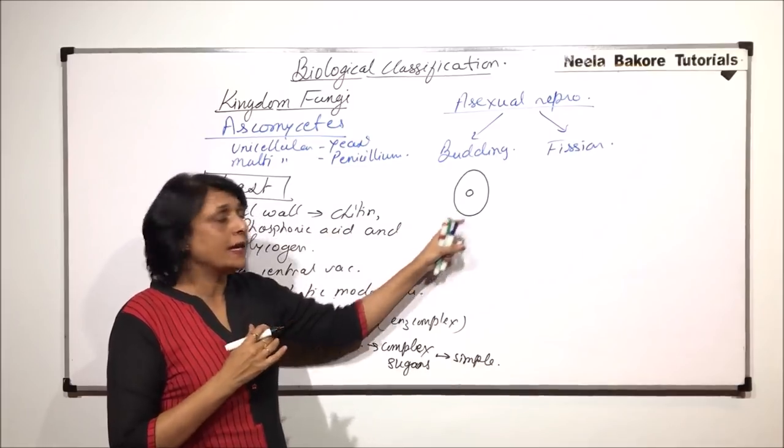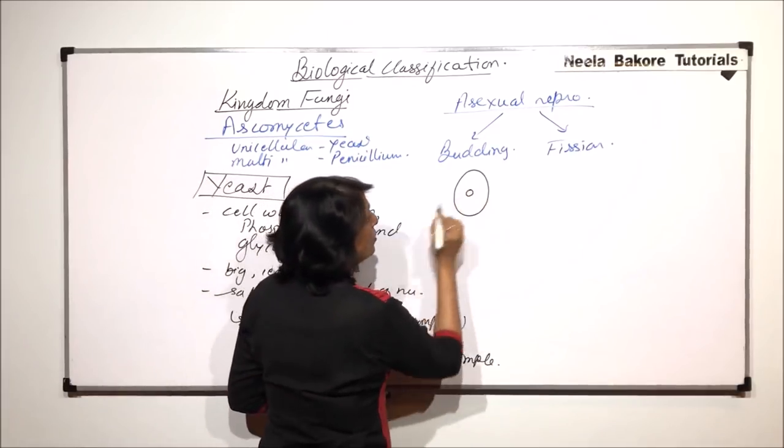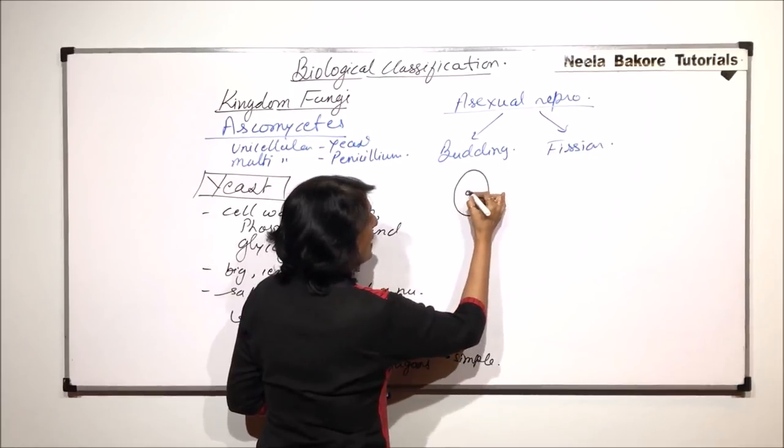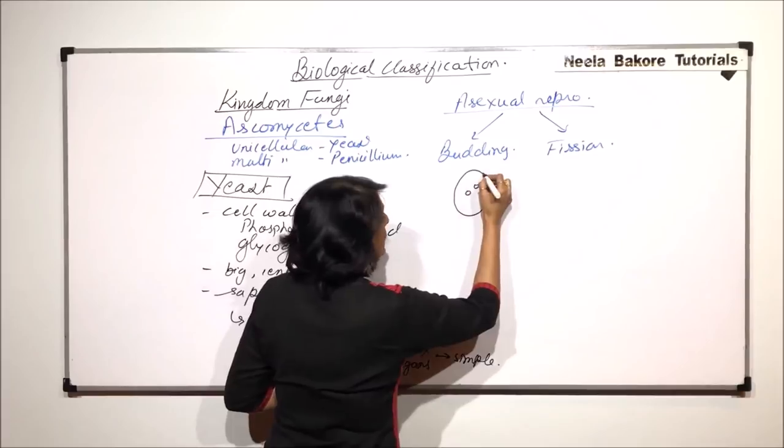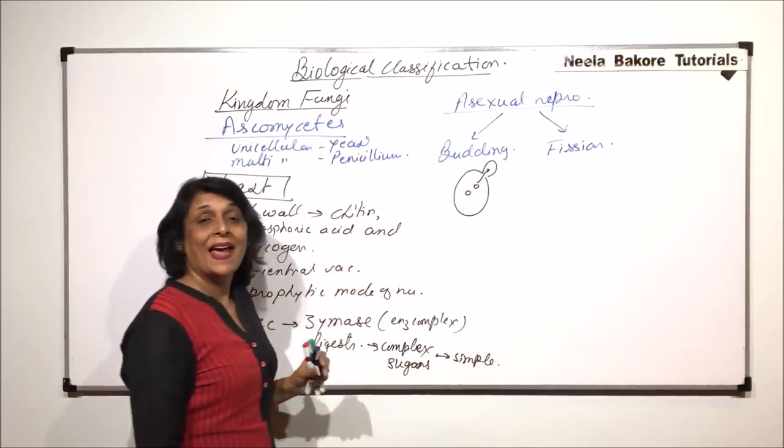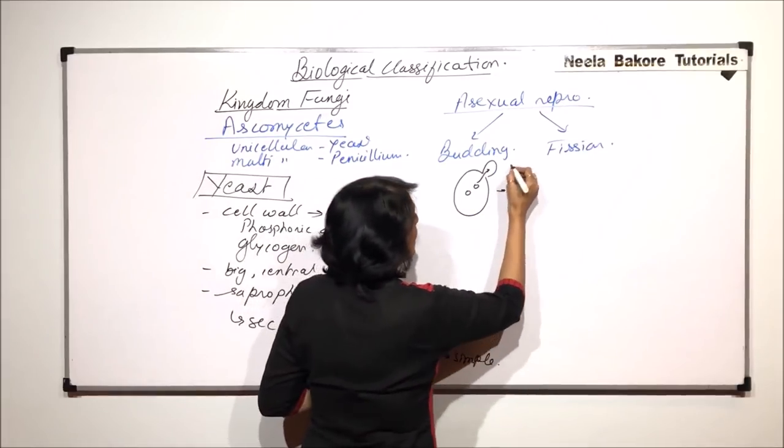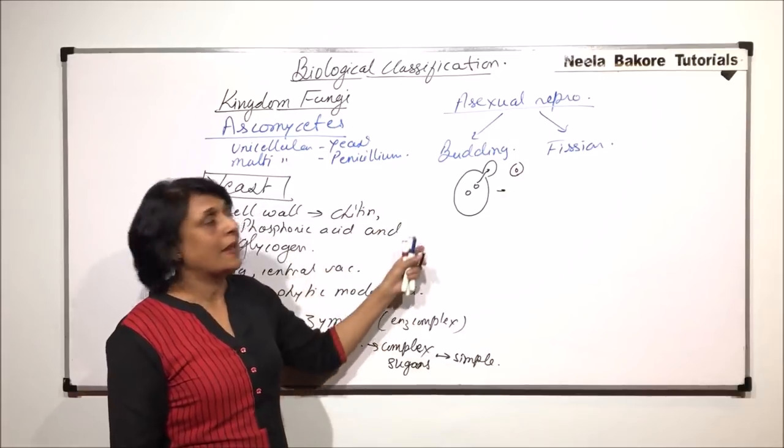So, what happens in case of budding is, suppose this is the parent cell and here is a nucleus. Though the nucleus is not here, it is slightly on one side because there is a large vacuole as we said. The nucleus divides by amitosis. So, there are two nuclei formed. A tiny bud develops.